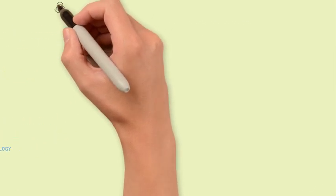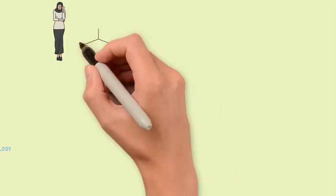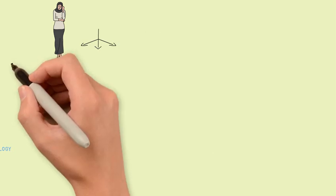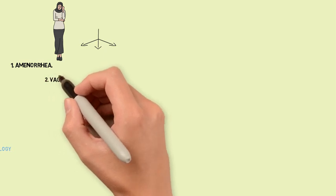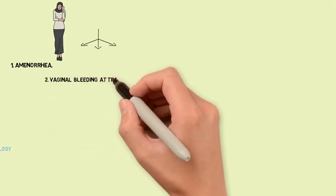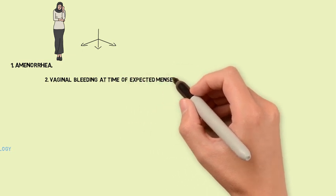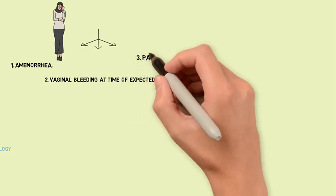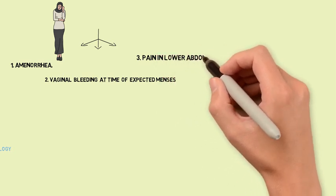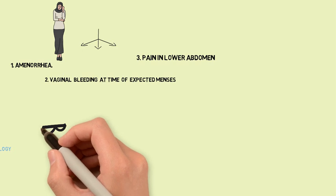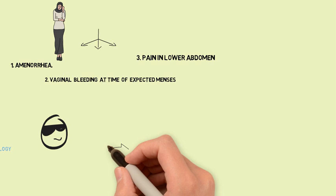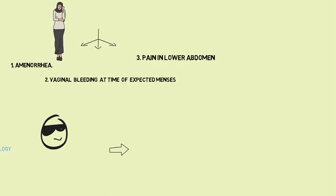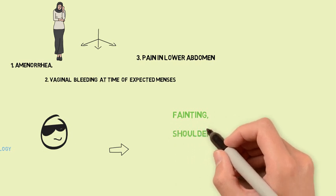Early diagnosis is aided by a high index of suspicion. Every reproductive age woman who presents with abdominal pain, vaginal bleeding, and/or amenorrhea should be screened for pregnancy. You should also be aware of vague symptoms such as fainting, shoulder tip pain, rectal pressure, and pain on defecation.